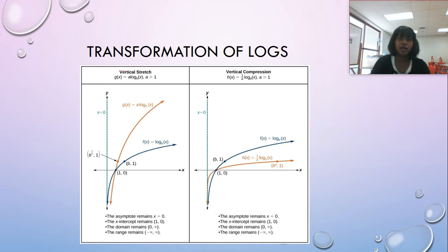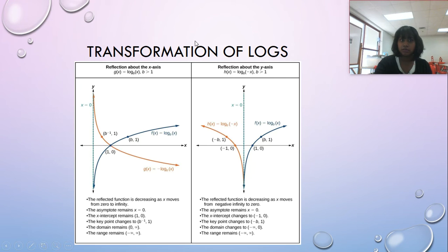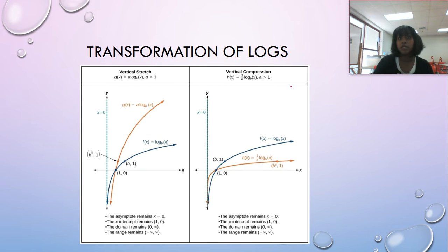Here we have vertical compression and stretching, and that's where your coefficient is right in front of the log. And for horizontal, well maybe I don't have an image for that, but horizontal would be your coefficient right in front of the variable.